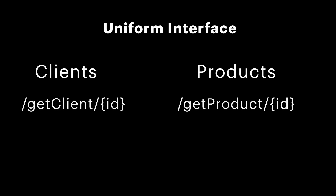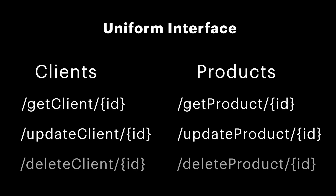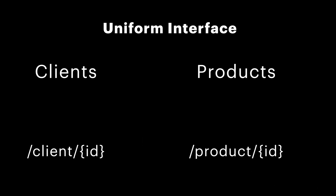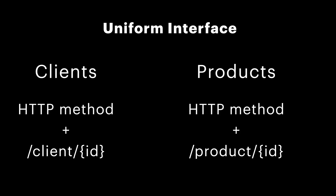Let's consider an example where we have a web application for selling products to clients. Logically, we have two entities: products and clients. So instead of creating an endpoint for each possible operation on each entity, let's identify those entities as resources and assign a unique URL for each of them, and then use HTTP methods to specify the operation we wish to perform.